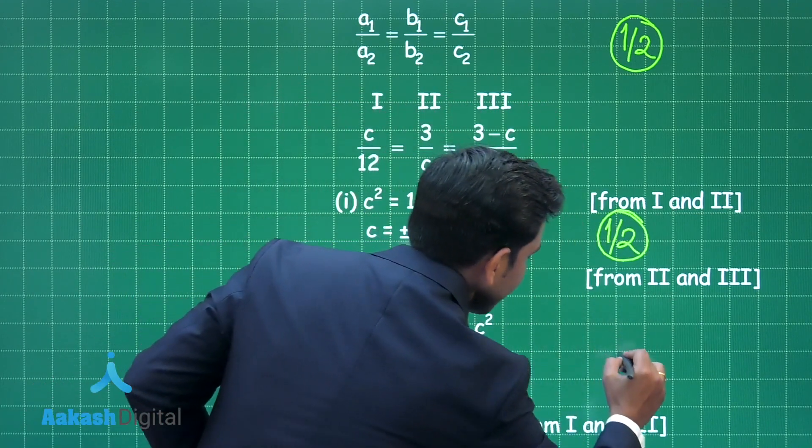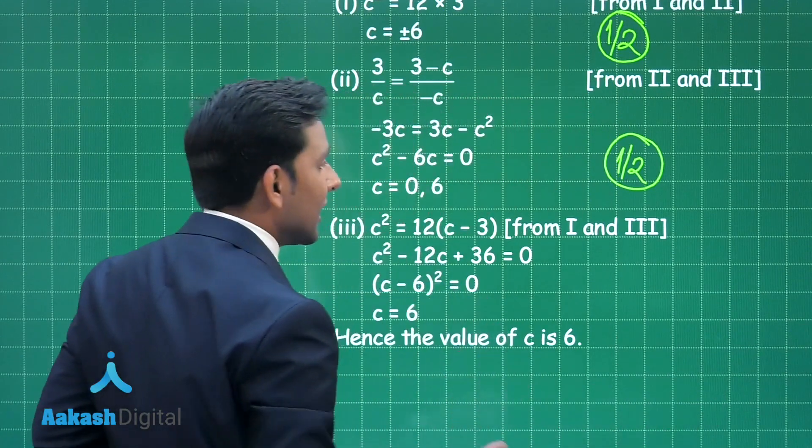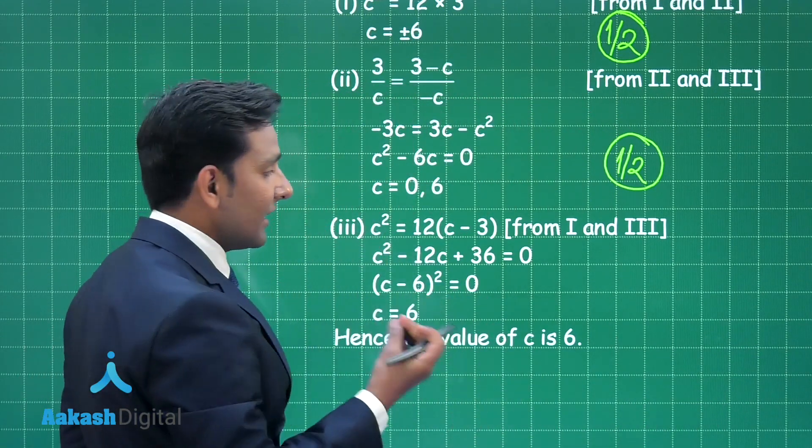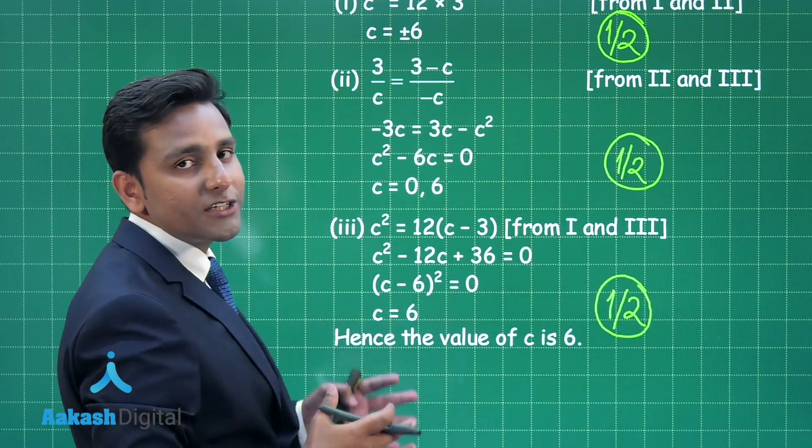Then this one will give you another half mark, and the rest half mark is based on the final answer, that means C is equal to 6. So this is the marking scheme of this question.